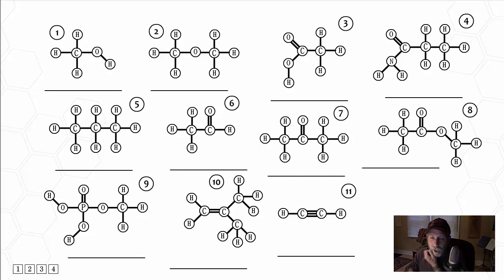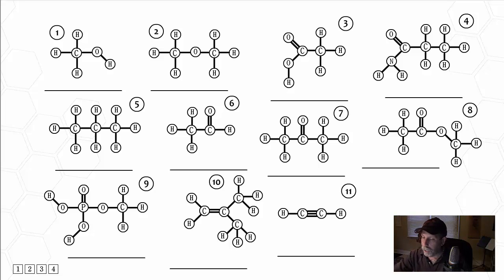What you see on this page here is 11 molecules. I've drawn the carbons, the hydrogens, the oxygens, whatever other atoms are there. I am using these black lines to represent the stick bonds — those are the bonds between the atoms. So here we have carbon, hydrogen, oxygen, and these are all single bonds.